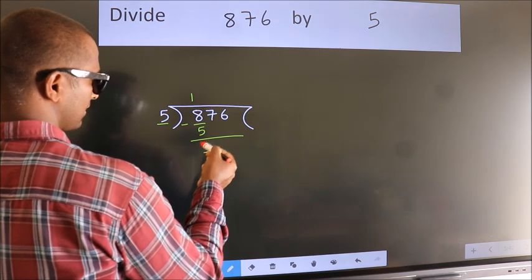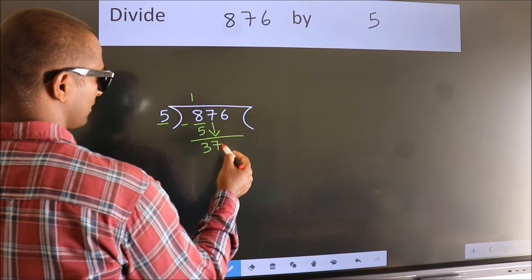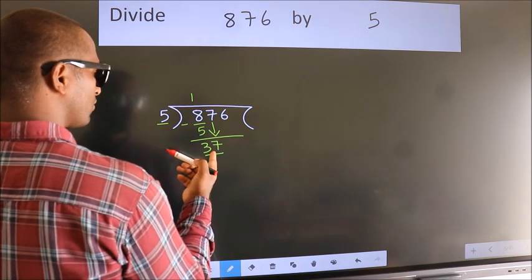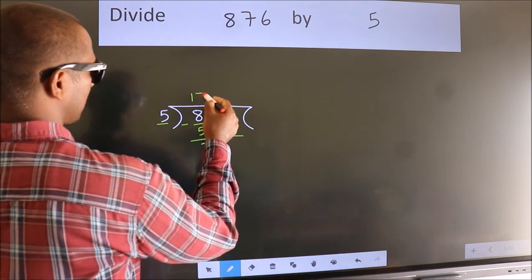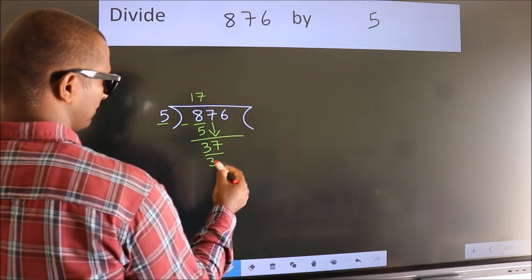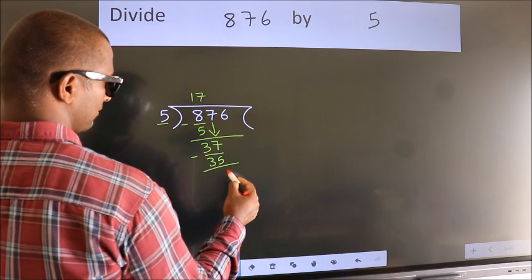After this, bring down the beside number. So, 7 down. So, 37. A number close to 37 in the 5 table is 5 7s 35. Now, we subtract. We get 2.